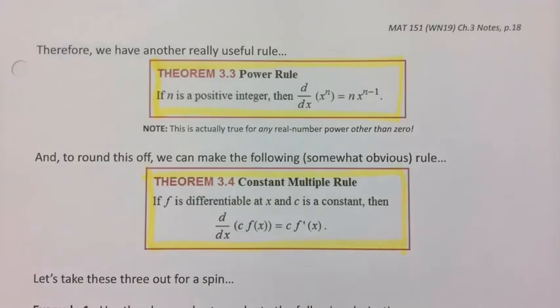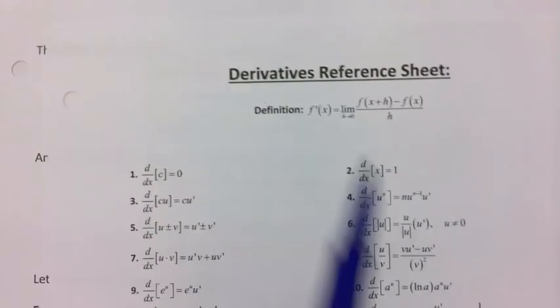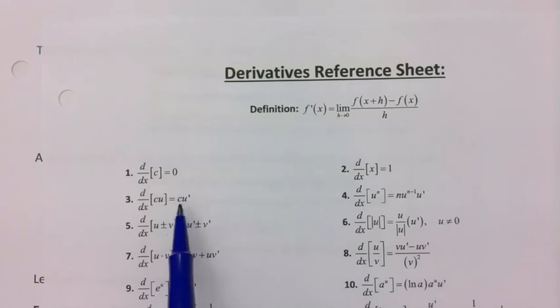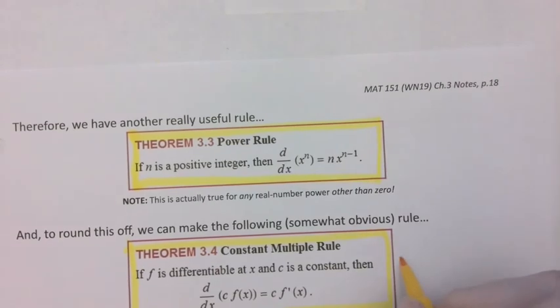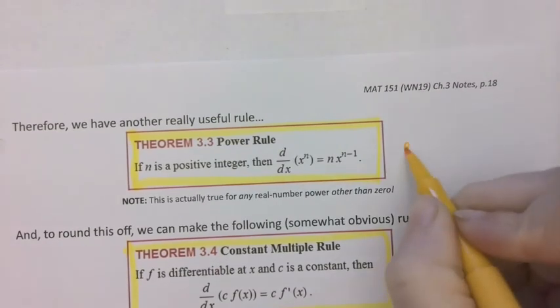And then the next one we have is this part, cf prime of x. If you have a constant, you just multiply the constant times the derivative. You don't have to take the derivative of the constant. And that's this rule right here. This is rule number 3, and the power rule is rule number 4. So this is rule number 3 on the sheet. This is rule number 4.